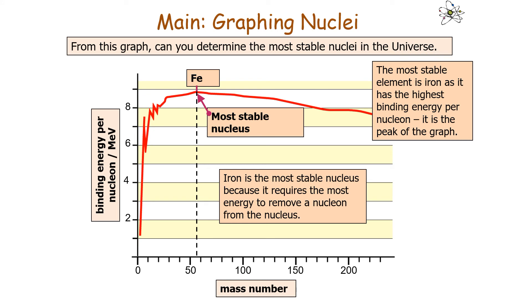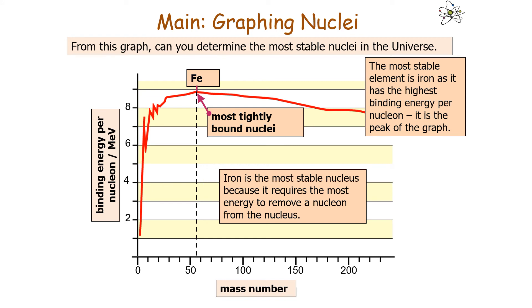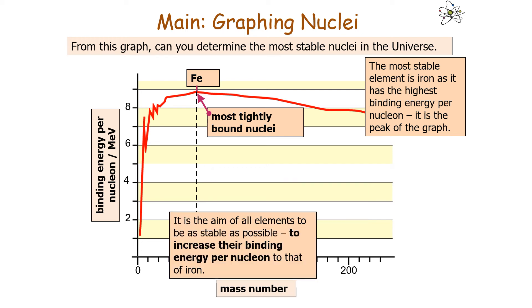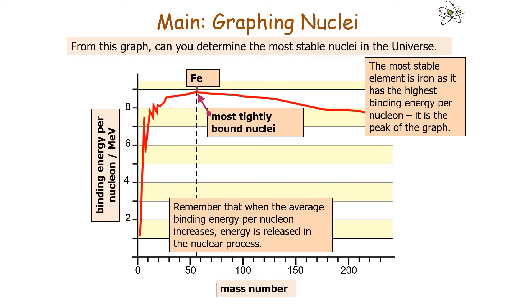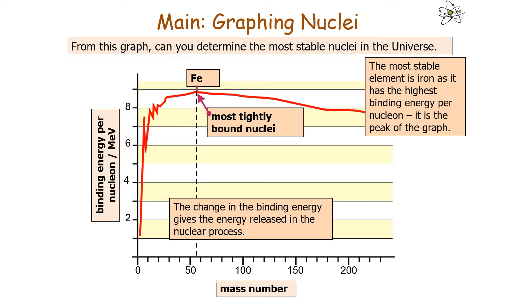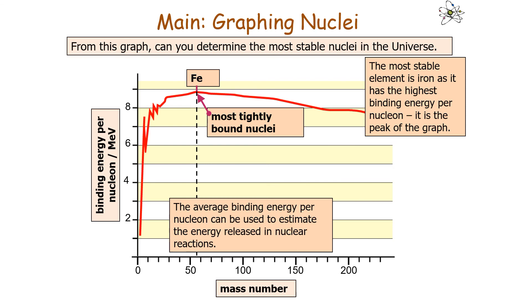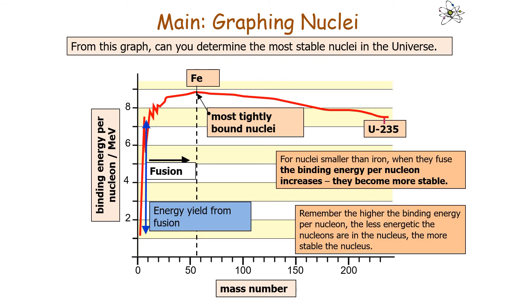Iron is the most tightly bound, most stable nucleus because it requires the most energy to remove a nucleon. It is the aim of all elements to increase their binding energy per nucleon toward that of iron. When the average binding energy per nucleon increases, energy is released in the nuclear process, and the change in binding energy gives the total energy released. For nuclei smaller than iron, when they fuse, the binding energy per nucleon increases and they become more stable — the nucleons are less energetic — so energy is released, which is why nuclear fusion releases energy.